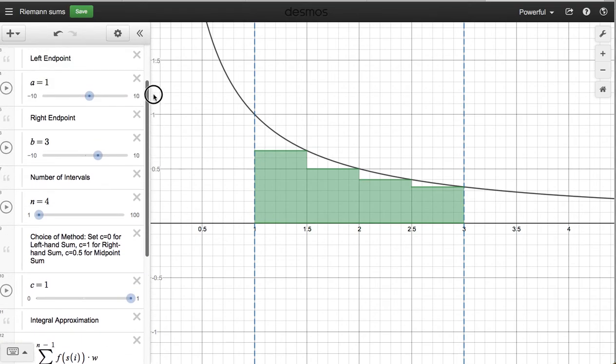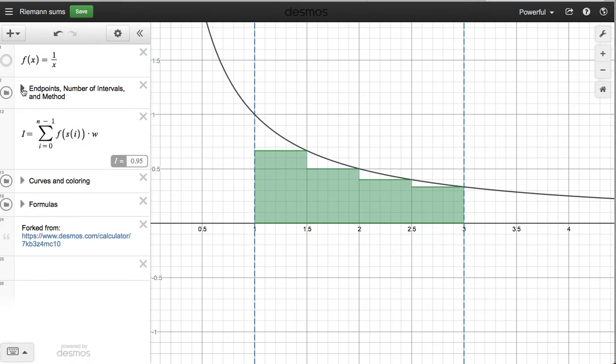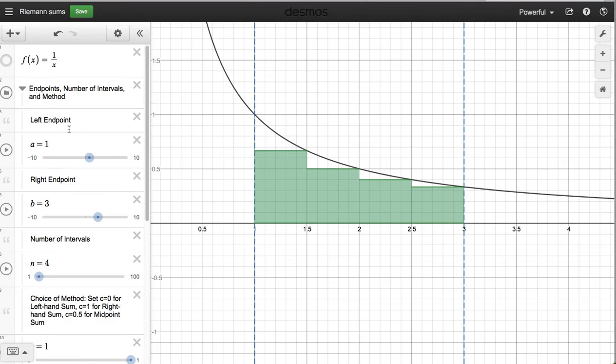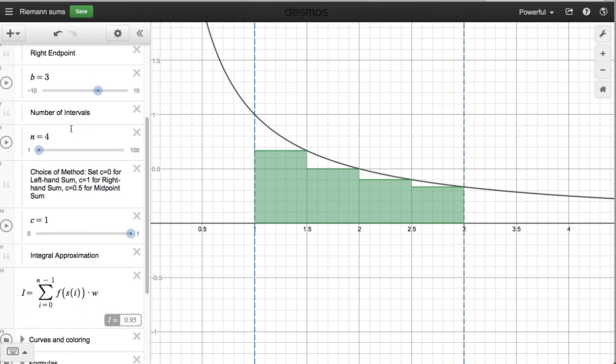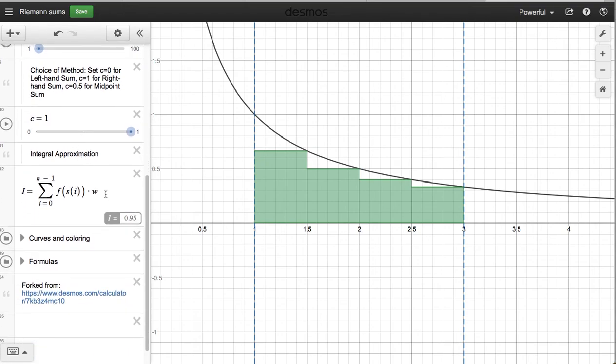Again, just to show you what I did: enter my function for f of x, then click the little drop-down arrow to adjust the left endpoint, the right endpoint, the number of intervals, and the method used. And then you'll get a Riemann sum.